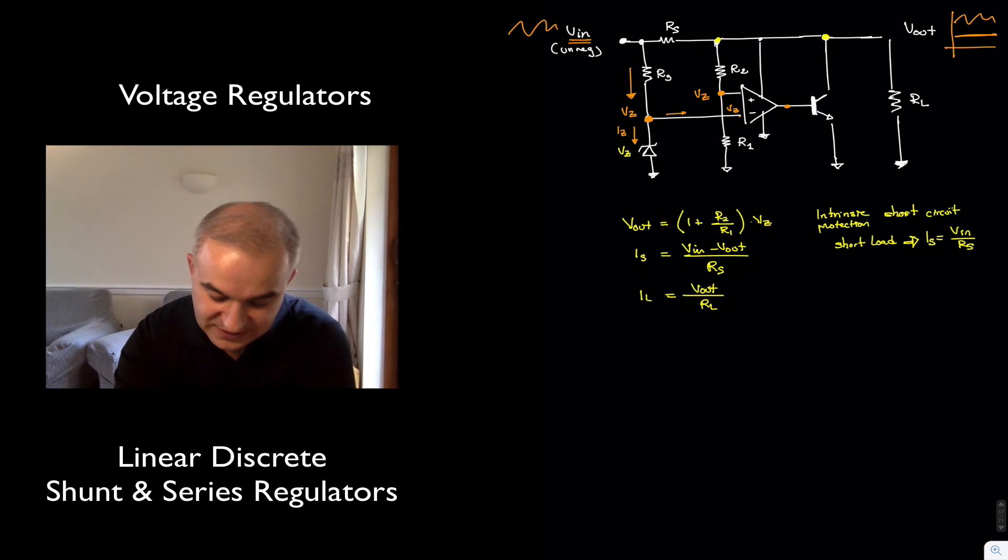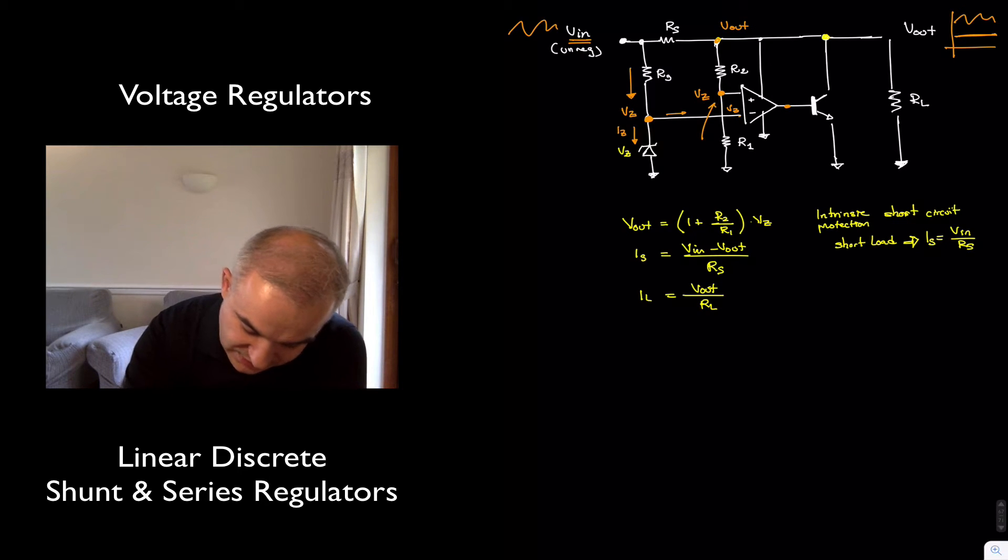And if that's Vz, and we have a voltage divider network here, we are going to see that this also, and this is the output voltage, Vz is equal to R1 divided by R1 plus R2 times V output voltage, or if you solve for the output voltage, you find that the output voltage is 1 plus R2 over R1 times the Zener voltage.